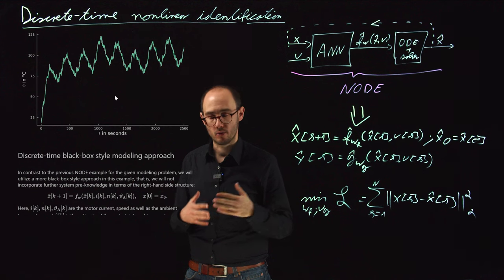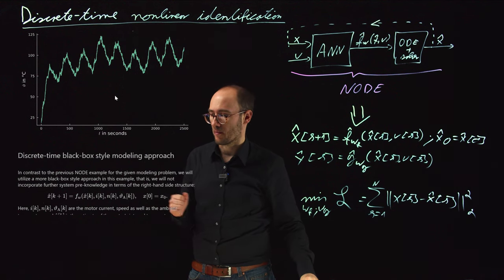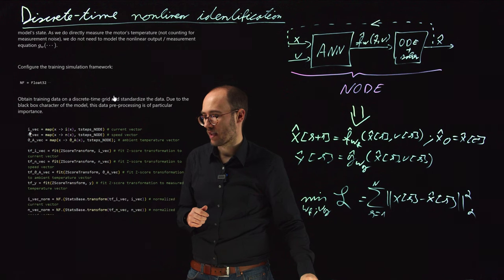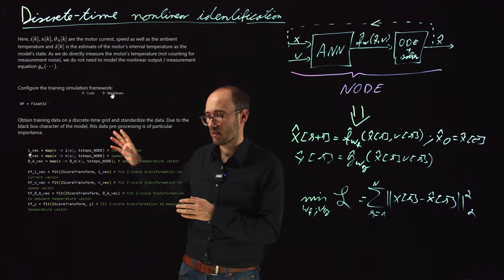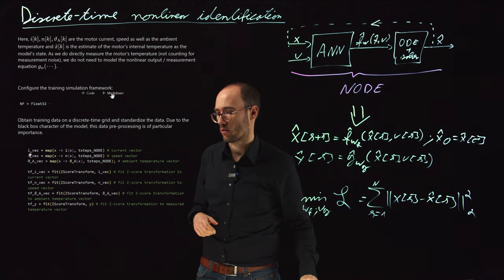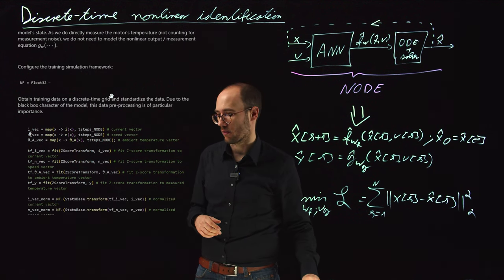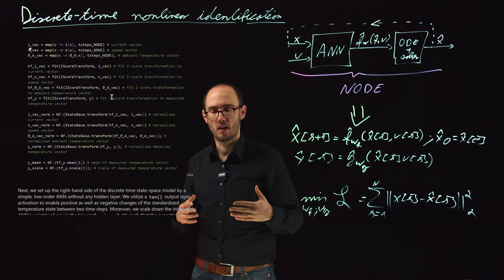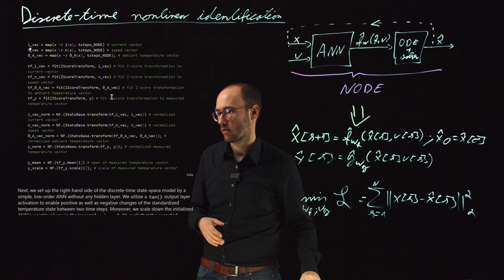You may remember that in the previous videos on the NODE approach, that already went not so well, because we had, like, divergent optimization problems or ODEs which basically were unstable numerically. So how do we do that? Since this is this black box approach, we first standardize all the data. So we take samples of the current, the speed, and the ambient temperature, and we standardize the data with respect to the z-score transformation. So that the data is neatly bias-free and scaled with respect to the standard deviation of all of the signals. Then we also, of course, do the same for the generated ground truth data in order to ensure that we can fit the model in a latent temperature space, so that the target temperature is actually also bias-free and scaled to its standard deviation.